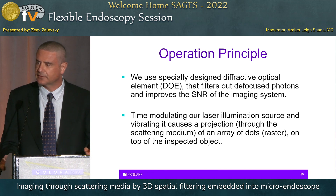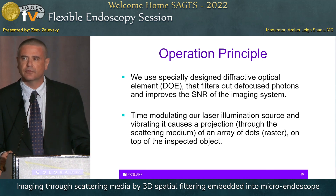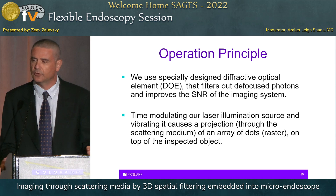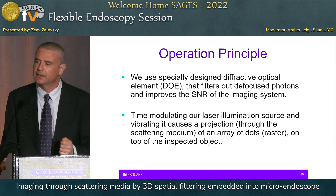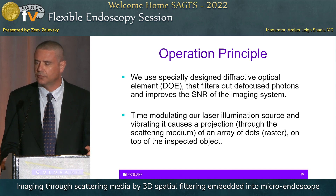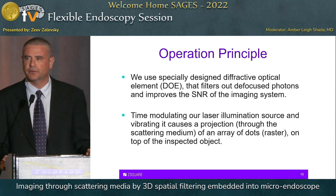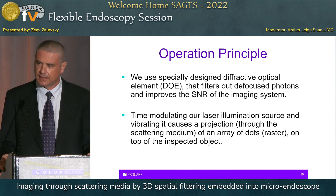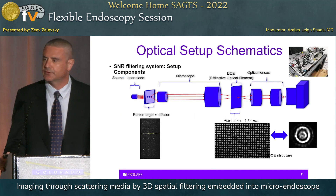We use a specially designed diffractive optical element which filters out the defocused photons, improving the signal-to-noise ratio of the imaging system. We use a pulsed laser to illuminate the object through the scattering medium, with the laser tip vibrated by a few microns during the illumination process. This generates an array of dots — a raster — projected through the scattering medium, through the blood, onto the object we want to image, producing a significant enhancement of the signal-to-noise ratio together with the diffractive optical element.